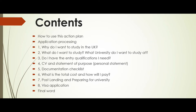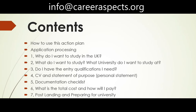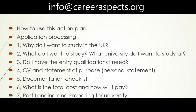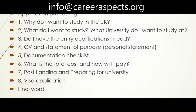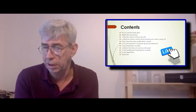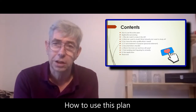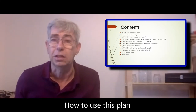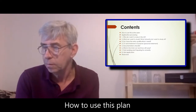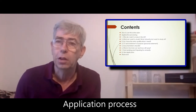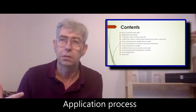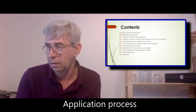First on this worksheet is the contents. You have to bear with me, I'm working from my laptop down here with this worksheet. It should also be up in the corner of the screen and we will cut to close-ups of it when necessary so that you can see it and work through it. So first off is the contents — what is contained in this particular worksheet — and we have how to use this action plan. We call it an action plan because it's a plan of action for you to prepare yourself for coming to study in the UK. The second is the actual application process, which differs from the process of planning, which I hope will become self-explanatory as we go through this video.